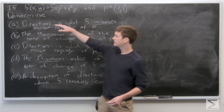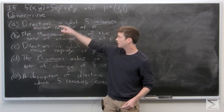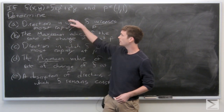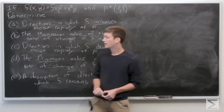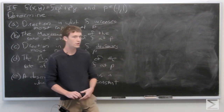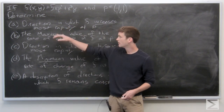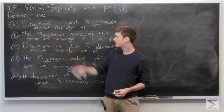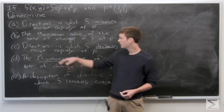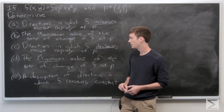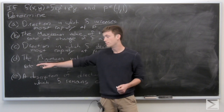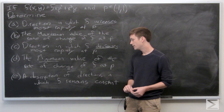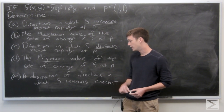In this problem, we're given the function f(x,y) = 5x²y² + x³y and the point p = (-1, 1). We're asked to determine: the direction in which f increases most rapidly at p, the maximum value of the rate of change of f at p, the direction in which f decreases most rapidly at p, the minimum value of the rate of change of f at p, and the directions in which f remains constant.